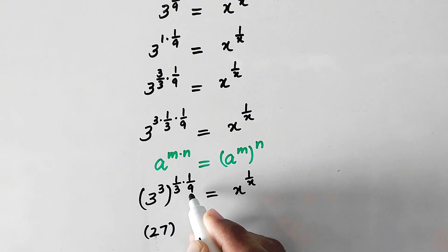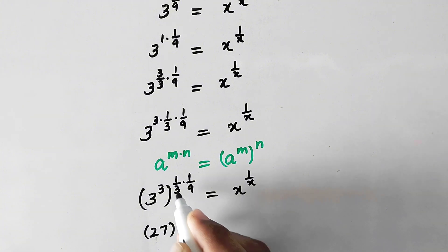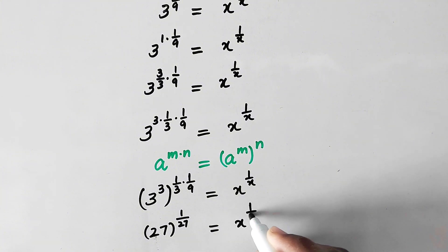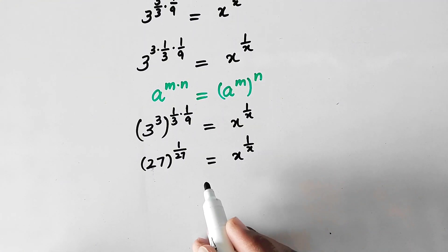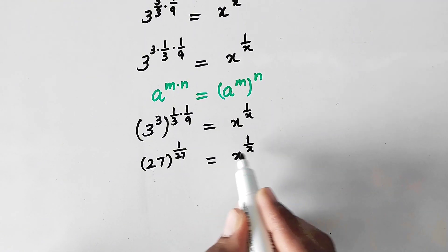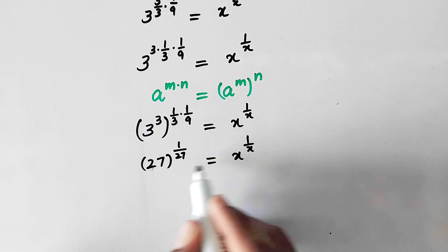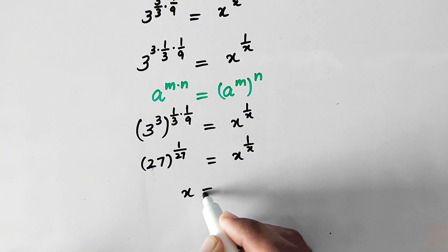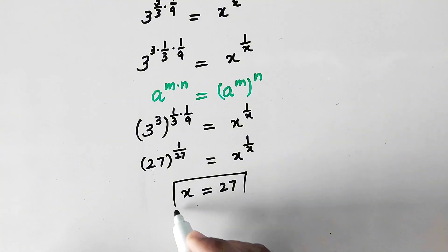Now we can see that the bases as well as the powers are equivalent to each other on both sides. So from the matching bases and powers we can get x equals 27. That is our final answer.